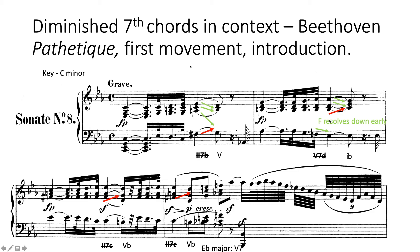Now, the next diminished seventh is B natural, D natural, F, A flat. The B is the note being treated as the leading note — it's going up to the C minor chord, chord one. Because that B has been treated as the leading note, I'm confident in saying it's really a kind of G dominant seventh flat nine chord. So that B natural is resolving upwards — it's really a five seven D one B progression. It's a little bit trickier here because the F resolves down a little bit earlier than the rest of the chord, which masks its resolution.